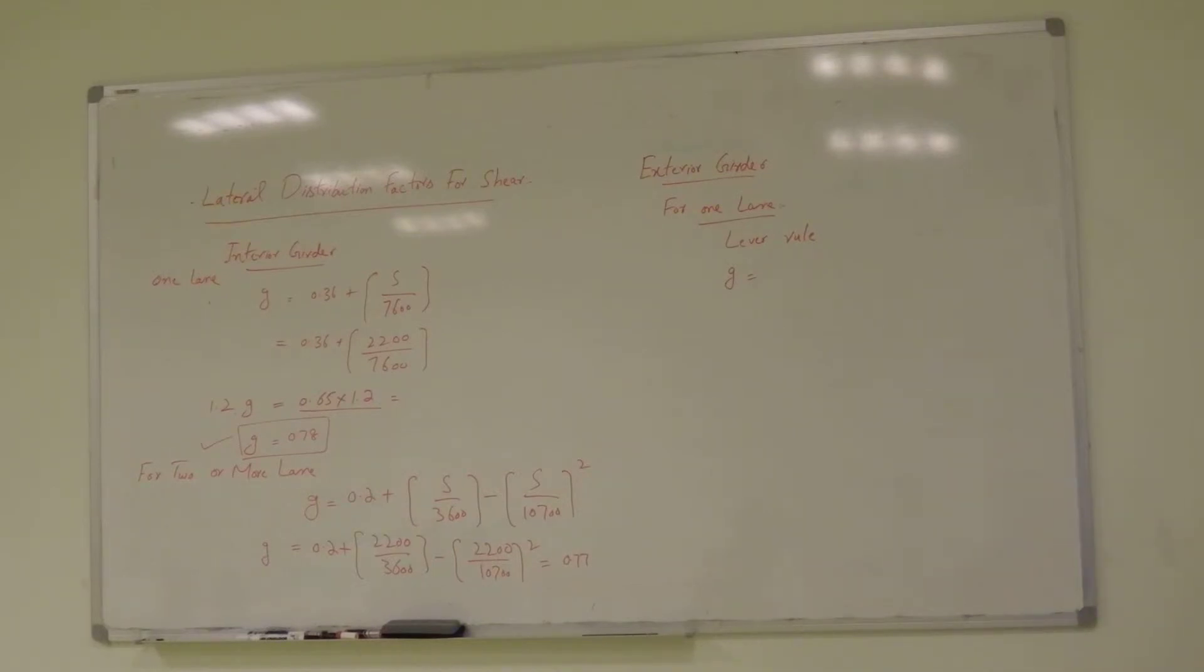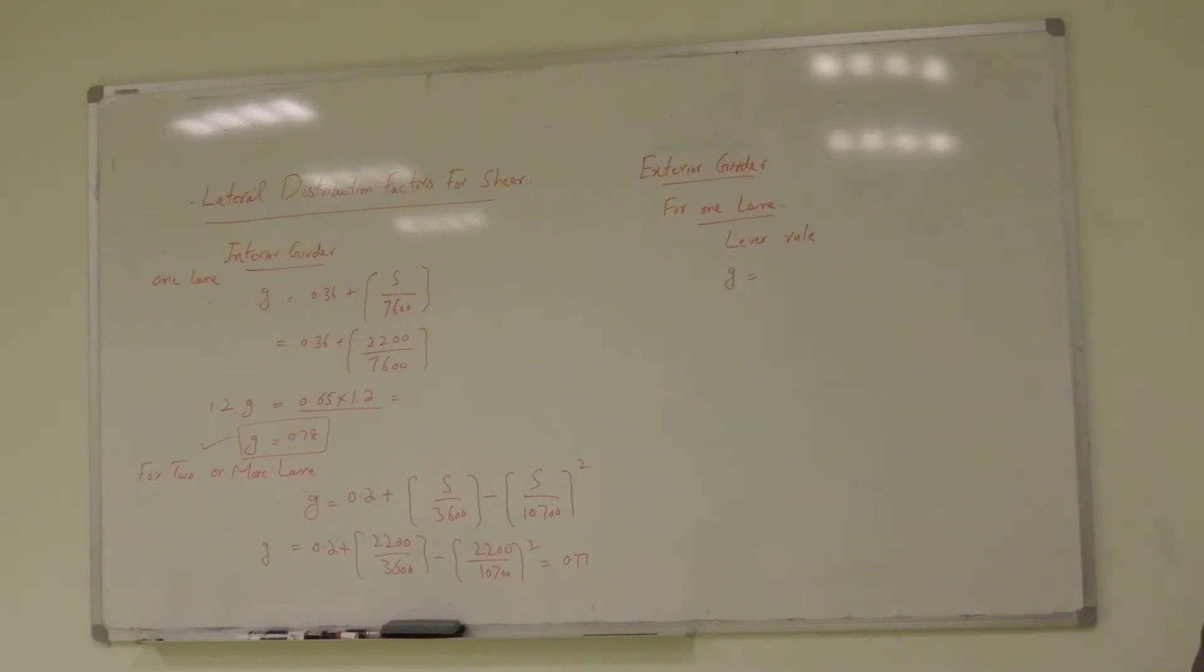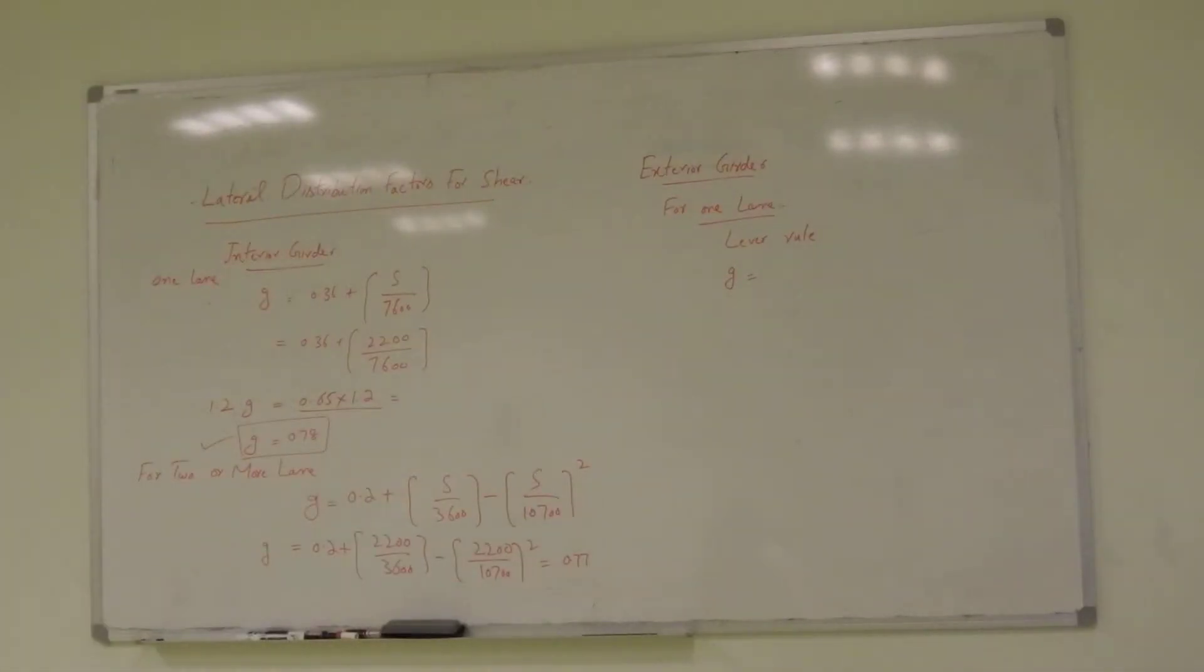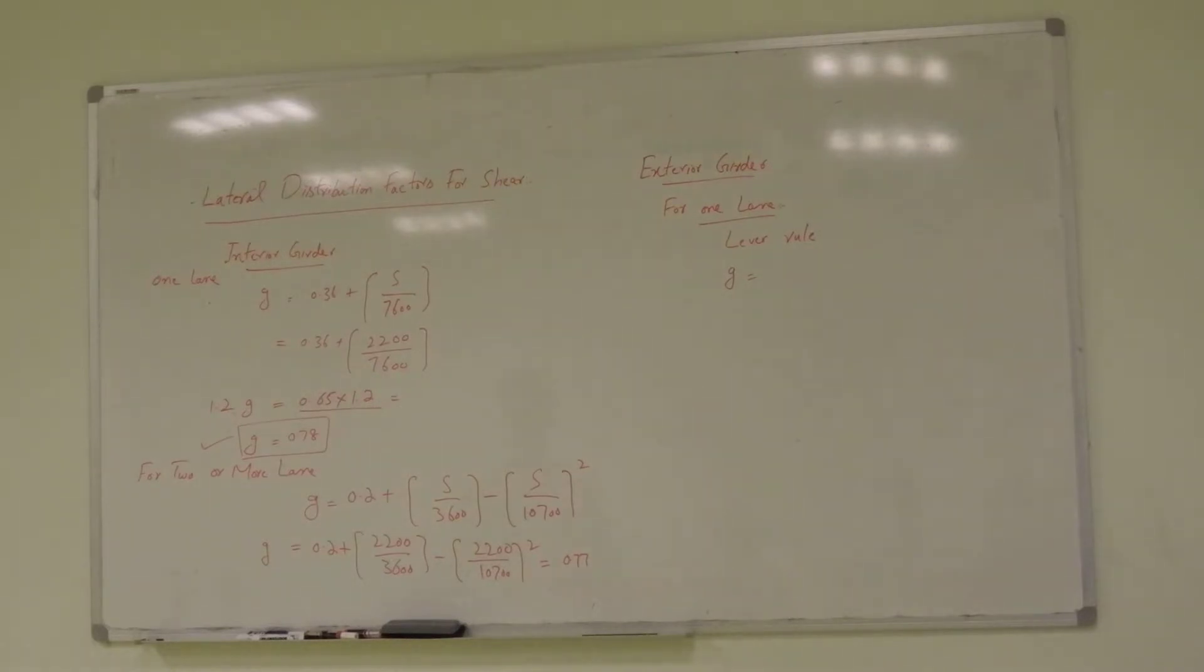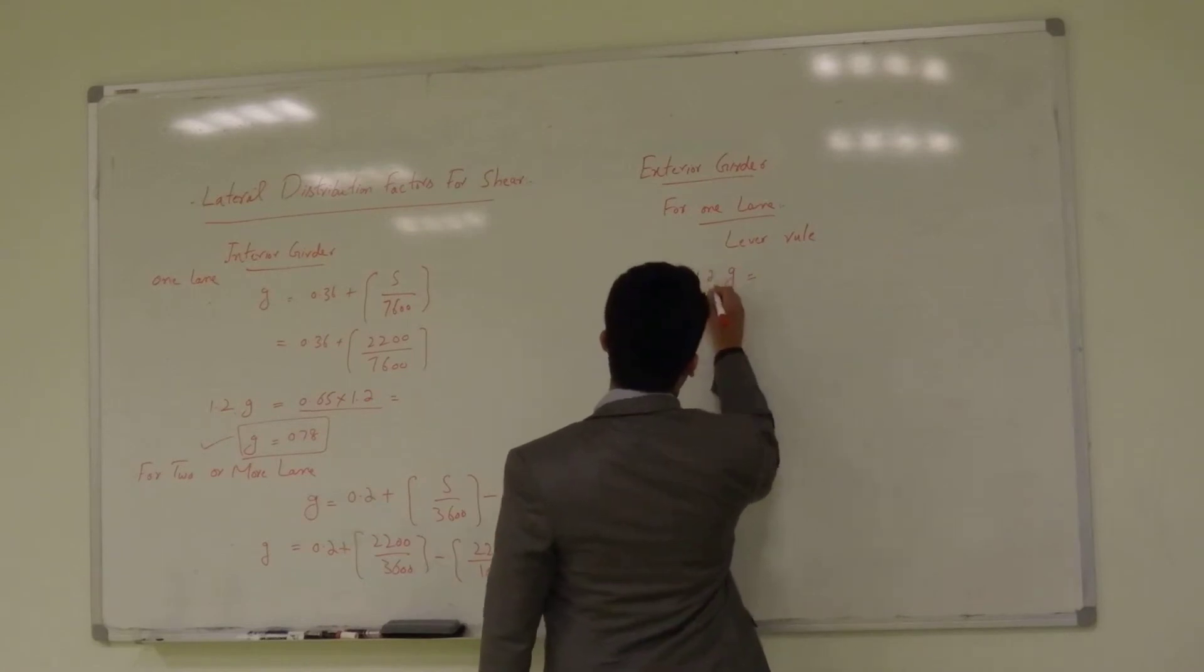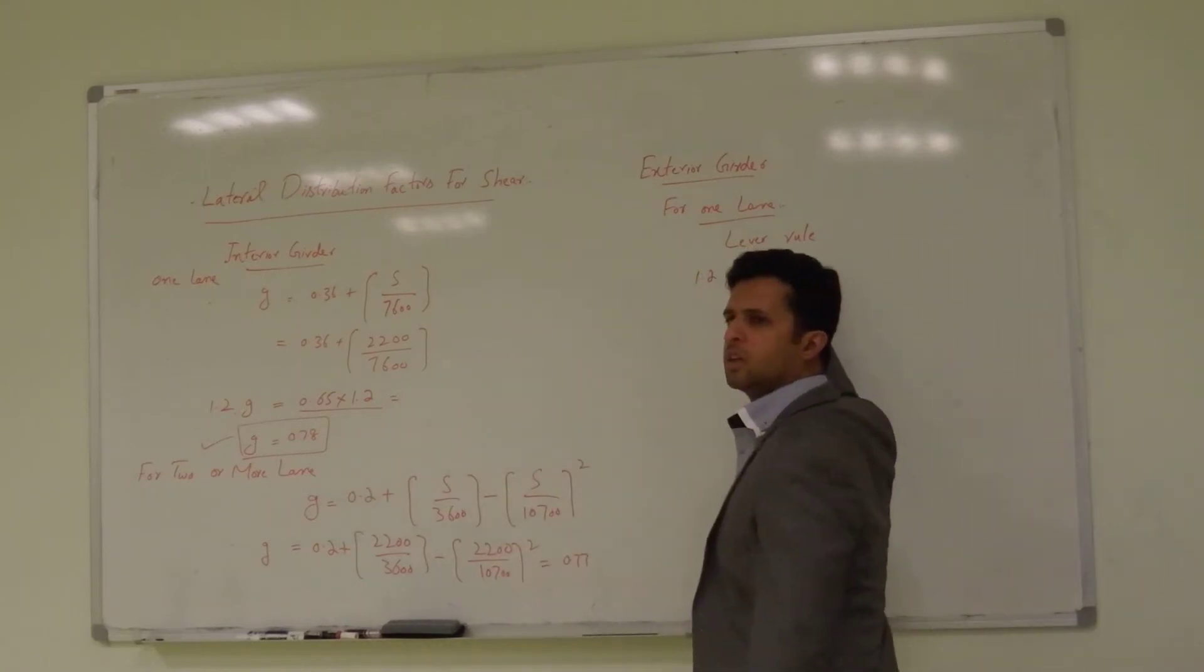For exterior g for moment, I hope you will be having the previous notes. So, the lateral distribution is one lane and then we have to use the lever rule that equals 0.82 with 1.2, the 1.2 g equals 0.82.